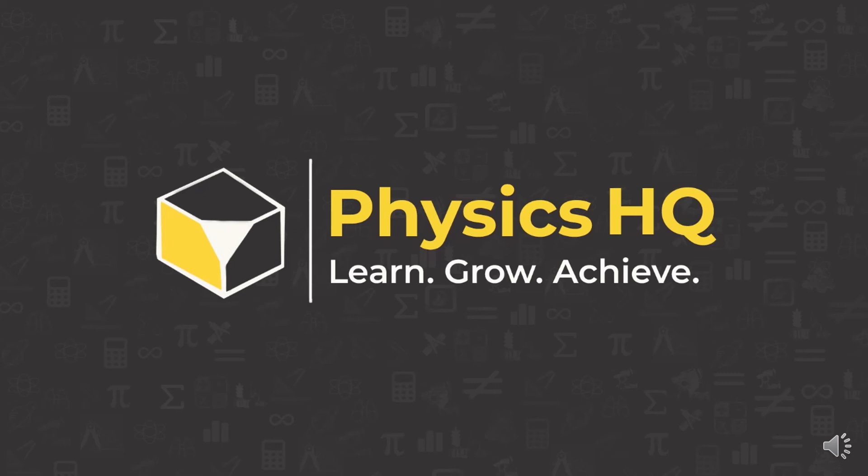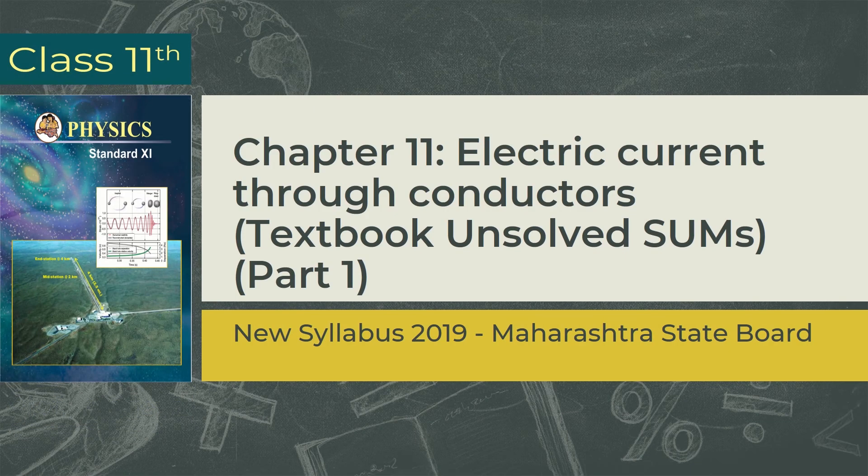Hello everyone, welcome back to Physics HQ. This is Professor Sandeep, your tutor for the class 11 series. Continuing with the lecture series of solving MCQs and sums of class 11 physics, today we will be covering the textbook unsolved sums of chapter 11 electric current through conductors. We have already covered the MCQs of this chapter. Please check it out if not done yet by clicking on the top right eye icon. Let us start with the first sum.